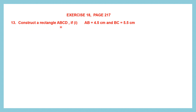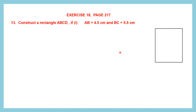Construct a rectangle ABCD. In the first one we've been given AB and BC measurements. Now these are adjacent sides. So how do we construct a rectangle when we have adjacent sides given to us? So first let's draw a rough figure. Let's name it as ABCD. This is a rectangle.